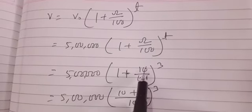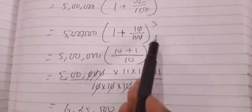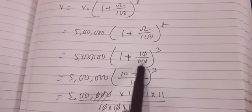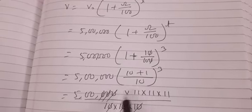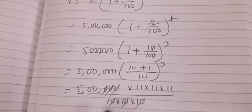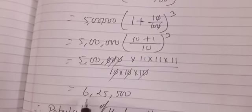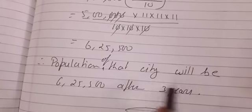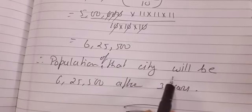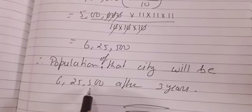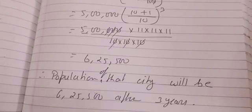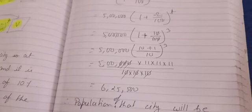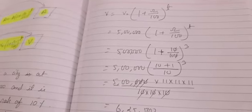Substituting: V = 5 lakh × (1 + 10/100)^3. The zeros cancel, leaving 5 lakh × (11/10)^3, which equals 5 lakh × 11 × 11 × 11 / (10 × 10 × 10). After calculation, we get 6 lakh 25,500. We end with a statement since this is a word problem: the population of that city will be 6,25,500 after three years. This video is now over — please see the next video for depreciation and the remaining sums.